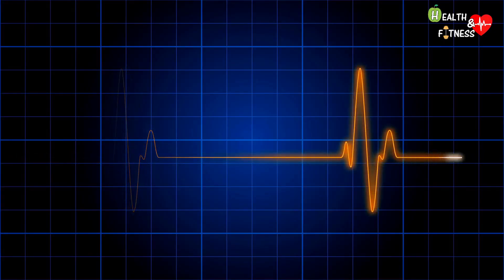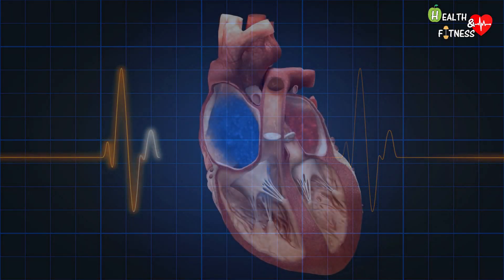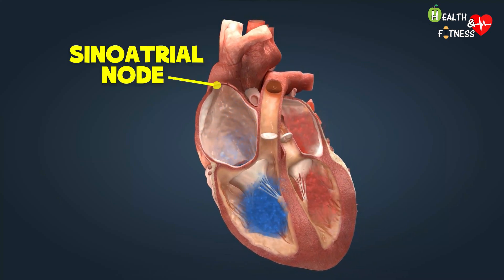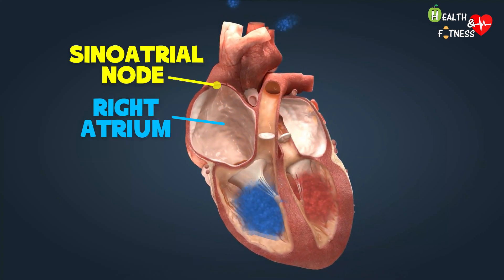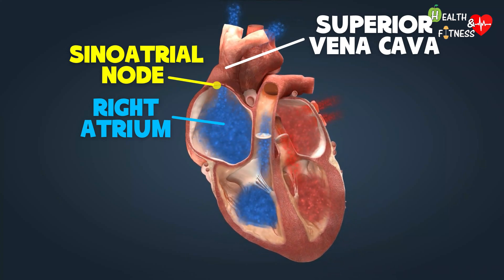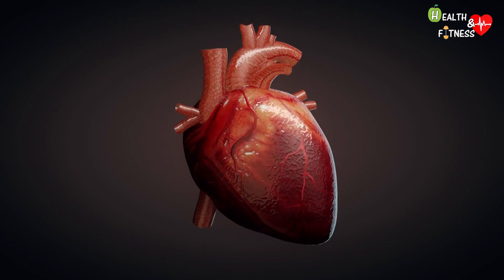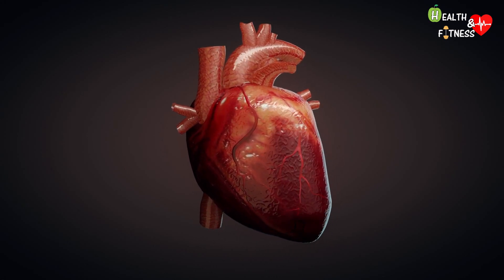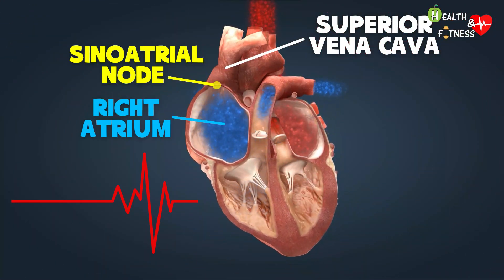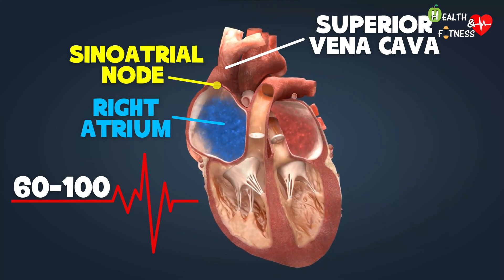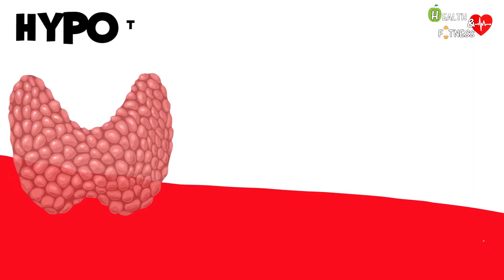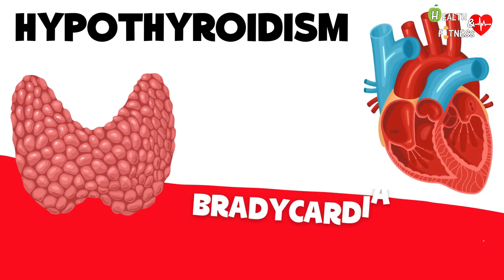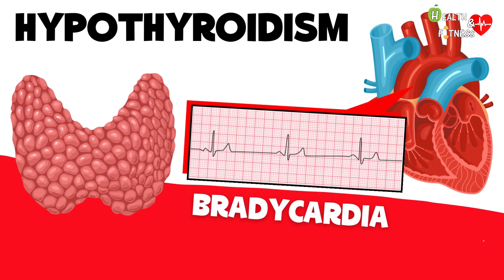Heart rate indicates the number of beats or contractions the heart makes in one minute. It is in the sinoatrial node, located in the right atrium near the outlet of the superior vena cava, that the electrical impulse originates, spreading progressively throughout the heart muscle to allow contraction of the myocardium and therefore the heartbeat. In an adult at rest, the ideal heart rate is between 60 and 100 beats per minute. In hypothyroidism, bradycardia is recorded — a resting heart rate slower than normal, usually below 60 beats per minute.